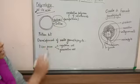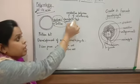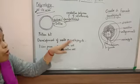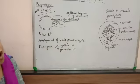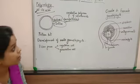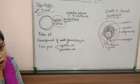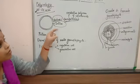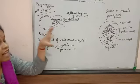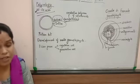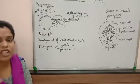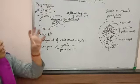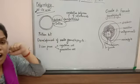The exine is actually made up of sporopollenin. Sporopollenin is an oxidative polymer of carotenoids. It is a very tough and resistant substance which helps to keep pollen grains preserved for a long time.